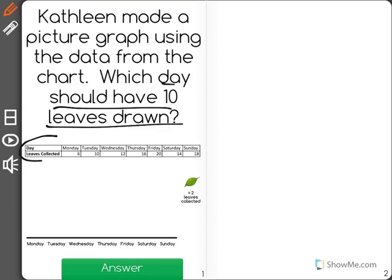Now here's our data from the chart right here, but the most important part of this picture graph is our key, which says that each leaf drawn is equal to two leaves collected.